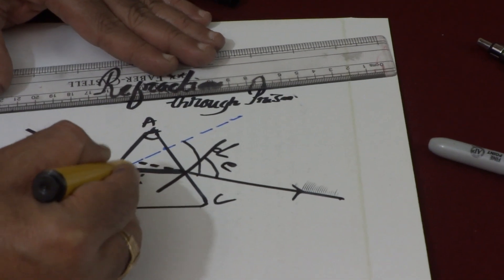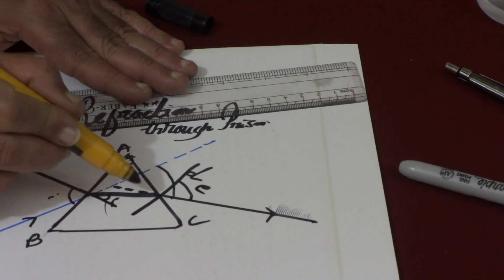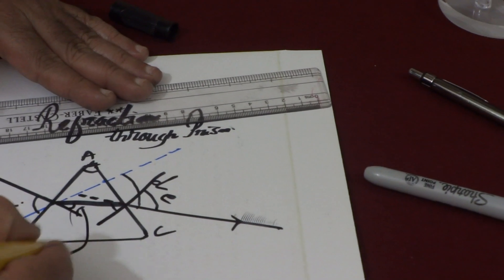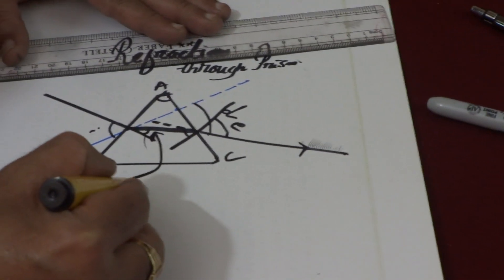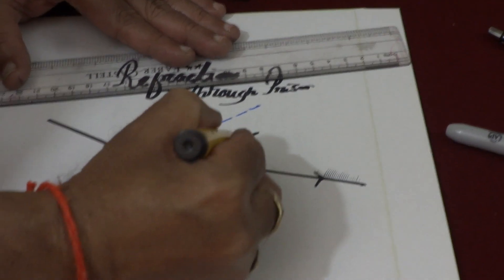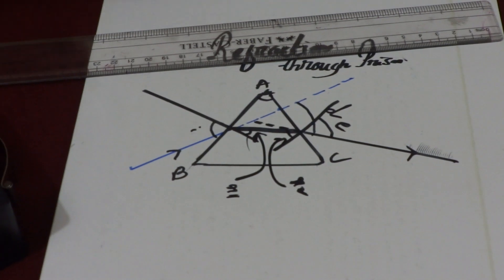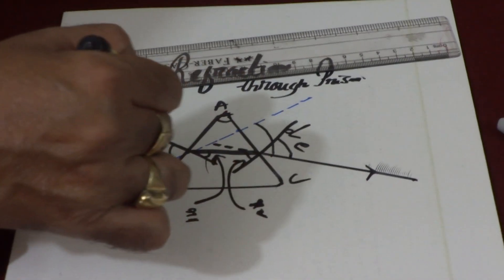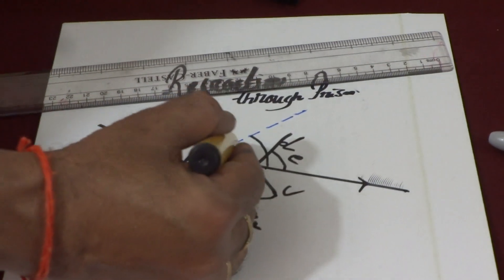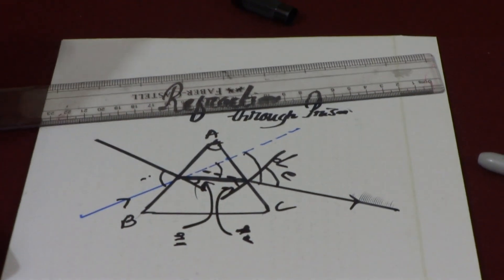This angle is called first angle of refraction. This is second angle of refraction. So we can say that this is r1, this is r2. And then this is emergent angle, that is e. And the angle between the original incident ray and final emergent ray, this angle is angle of deviation.